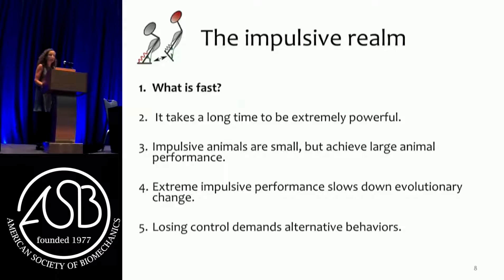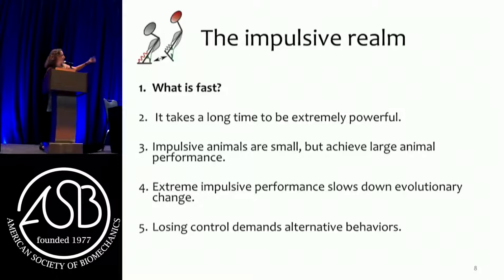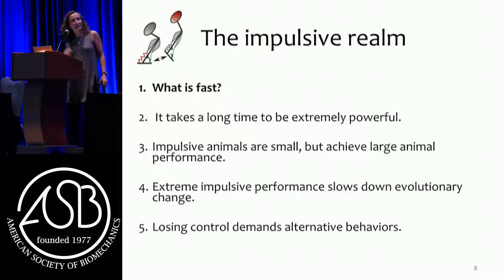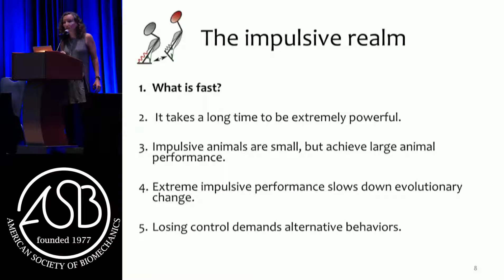I'm going to tell you five little stories about the impulsive realm. First, what is fast? Then I'll go back and forth between the really good things that happen when impulsive systems evolve, and the bad things - like it takes a long time to be extremely powerful. Impulsive animals are small but achieve large-animal performance. Extremely impulsive performance slows down evolutionary change. And losing control demands alternative behaviors. I'll tell a full story about each one.